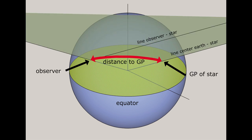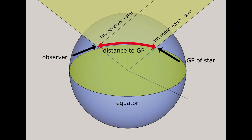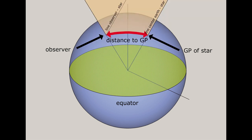The whole purpose of celestial navigation on a globe is that the plane formed by the observer, the star, and the GP of the star is the same as the plane through the center of the earth — in which plane the 60 nautical miles per degree is applied. This is basic geometry, something Iron Fe obviously hasn't understood.